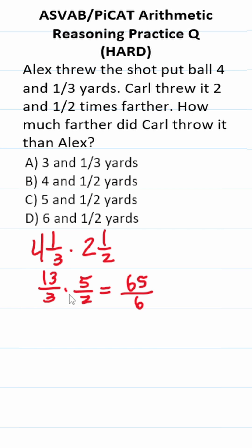To multiply these out, let's convert them to improper fractions. This becomes 13 over 3 times 5 over 2, which is 65 over 6.